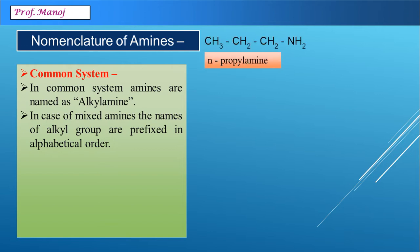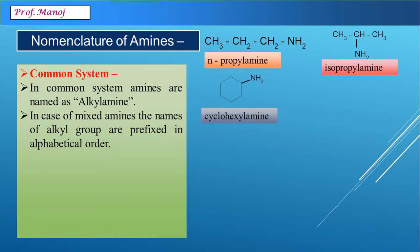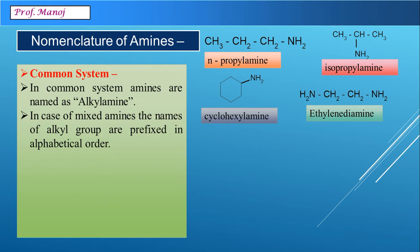Consider some examples. An n-propyl group connected to amine is called n-propyl amine. Another similar one is isopropyl amine. A cyclohexyl group connected to amine is called cyclohexyl amine. Here we also have a compound with two amine groups, which is ethylenediamine.